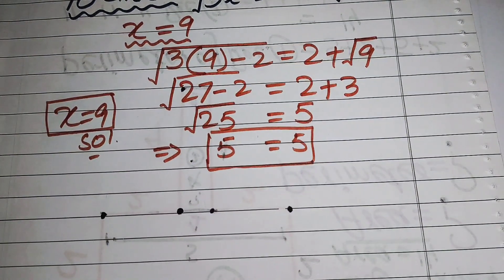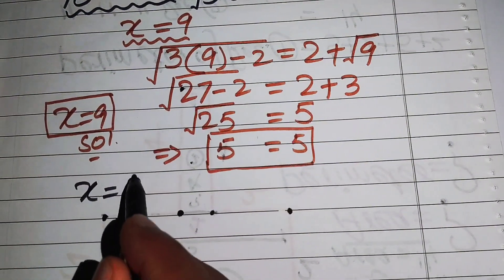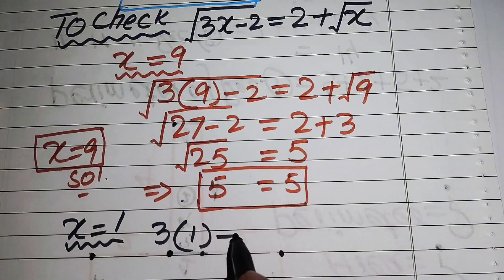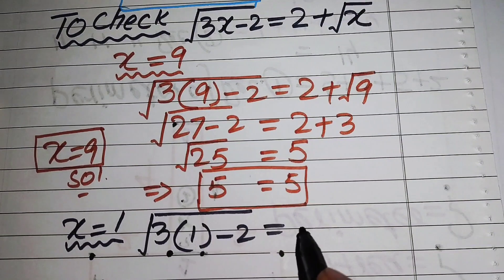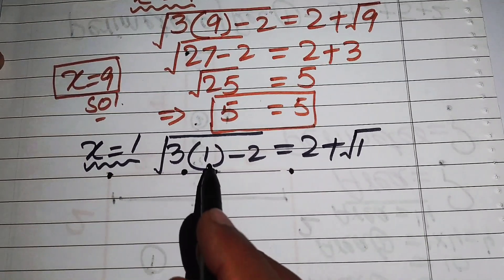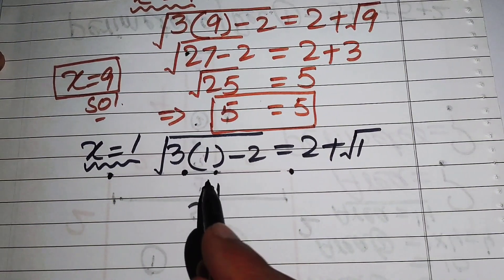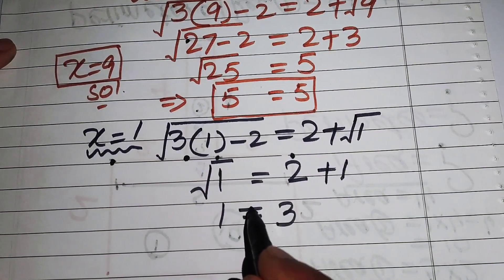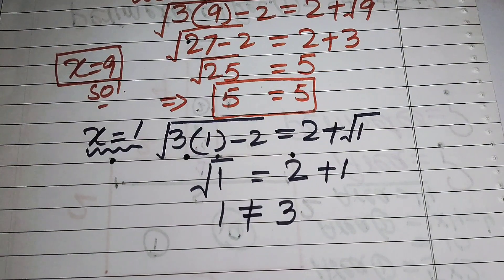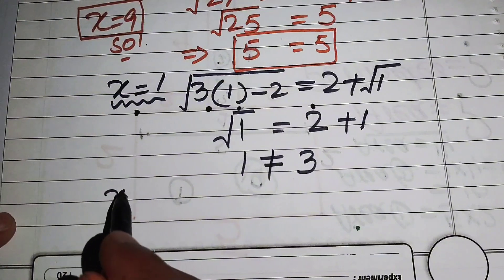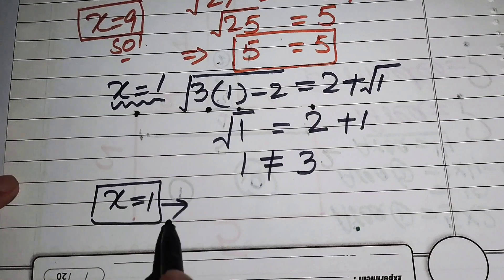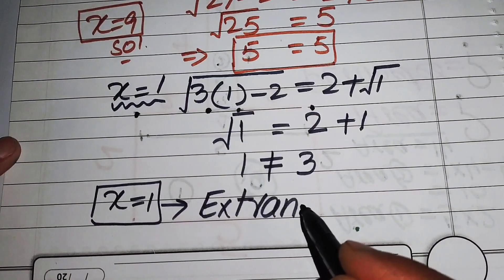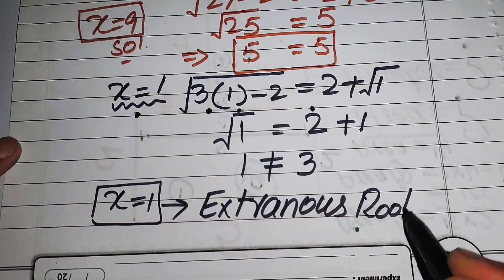Now we check x equals 1. Substituting into the original equation: the square root of (3 times 1 minus 2) equals 2 plus the square root of 1. This gives the square root of 1 equals 2 plus 1, which is 1 equals 3. Since 1 does not equal 3, x equals 1 is not a solution — it is an extraneous root.